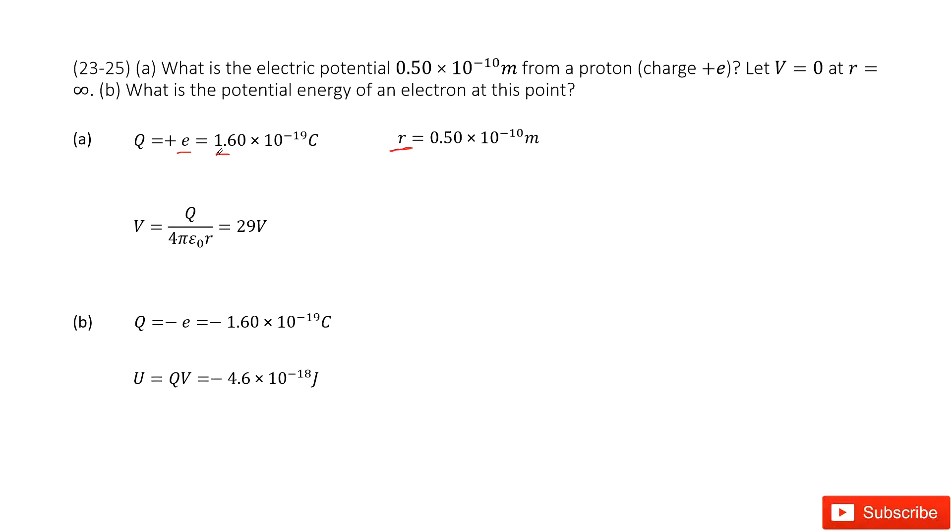The electric potential for a point charge is V = Q/(4πε₀r). We input all the known quantities and get the answer, 29V.